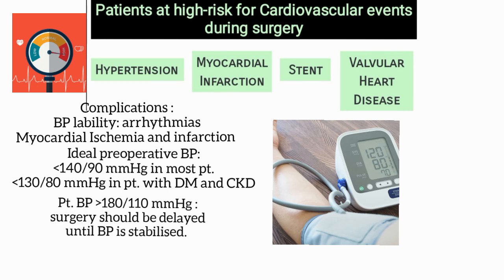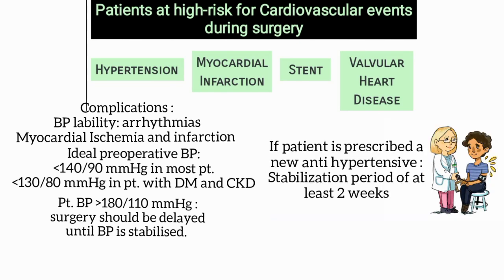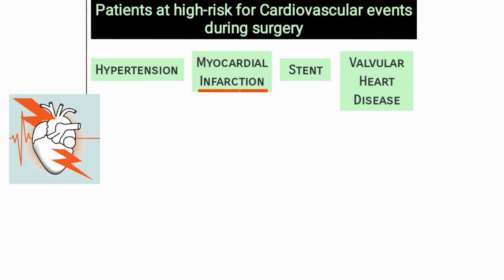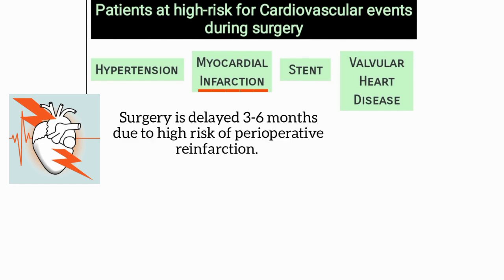In patients with blood pressure over 180/110, surgery should be delayed until blood pressure is stabilized. If the patient is prescribed a new antihypertensive, a stabilization period of at least two weeks should be allowed before surgery. If the patient has recently had an MI, elective surgery is contraindicated and should be delayed three to six months due to high risk of perioperative reinfarction.